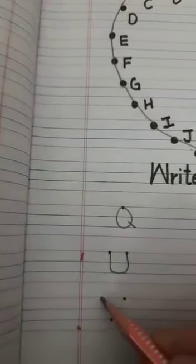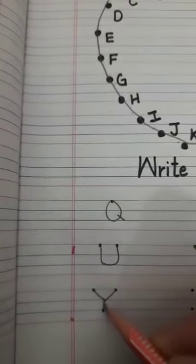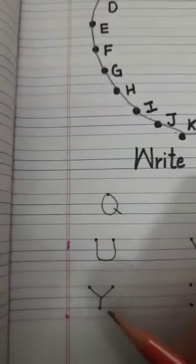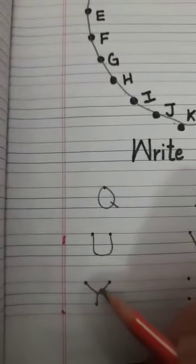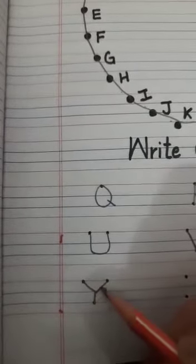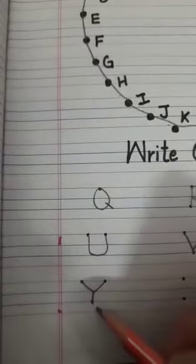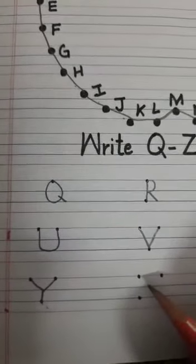X ke baad kya hai ga, children? It's Y. From here to here. And then small standing line. This is letter Y. This is the correct formation of letter Y, children. You have to make small V. From red line to first blue line. Then a small standing line. This is the formation of letter Y. Then what comes after Y, children? It's Z or Z.